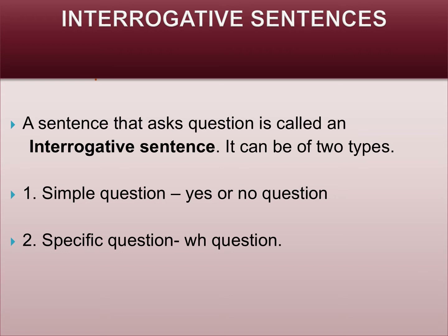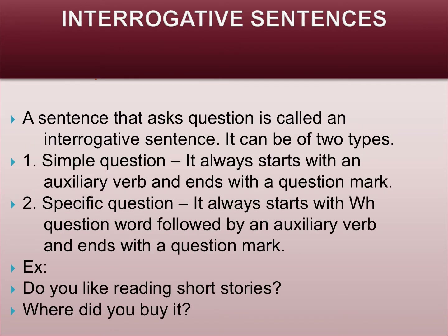For example, simple questions like 'Are you okay?', 'Is it yours?', 'Do you know that?' — this kind of question is called a yes or no question, and the answer is only one word: yes or no. Specific questions are like 'What do you want?', 'What's your name?', 'What are you doing?', 'Where are you going?', 'When will you come?' — this kind of question is called a specific question. Simple questions always start with an auxiliary verb and end with a question mark. Specific questions always start with a WH question word followed by an auxiliary verb and end with a question mark.